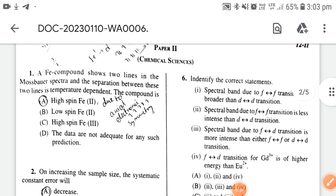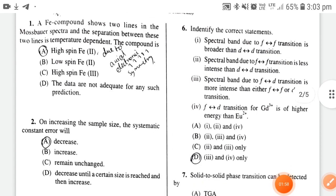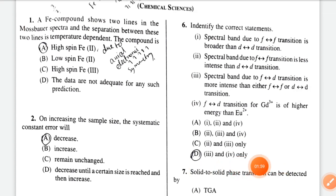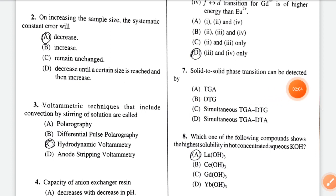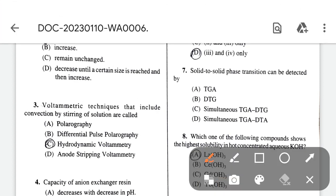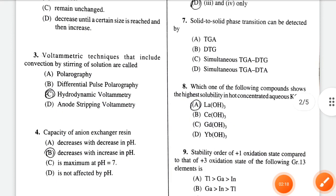Question 6: identify the correct statements. The correct option is option D, three and four only. Next, solid to solid phase transition can be detected by - in this question I have some doubt, but I will select option C. Next, which compound shows the highest solubility in hot concentrated aqueous KOH? The correct option is option A.